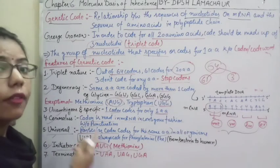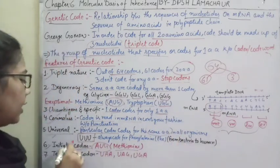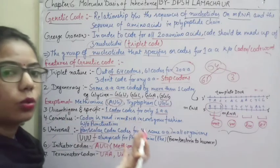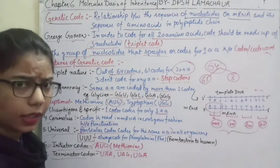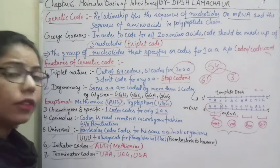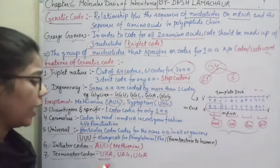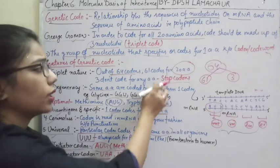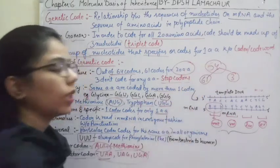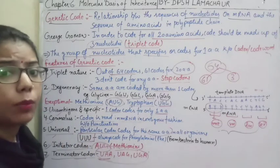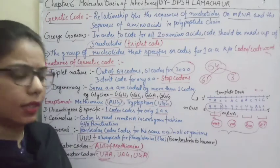All these things are useful when you will study translation — how protein is formed. You will understand the use of the initiator codon and the stop codon. Another feature is the terminator codon. Initiator means to start, and terminator means to stop. The stop codons UAA, UAG, and UGA are the three terminator codons that will not code for any protein — they are used to stop protein synthesis.